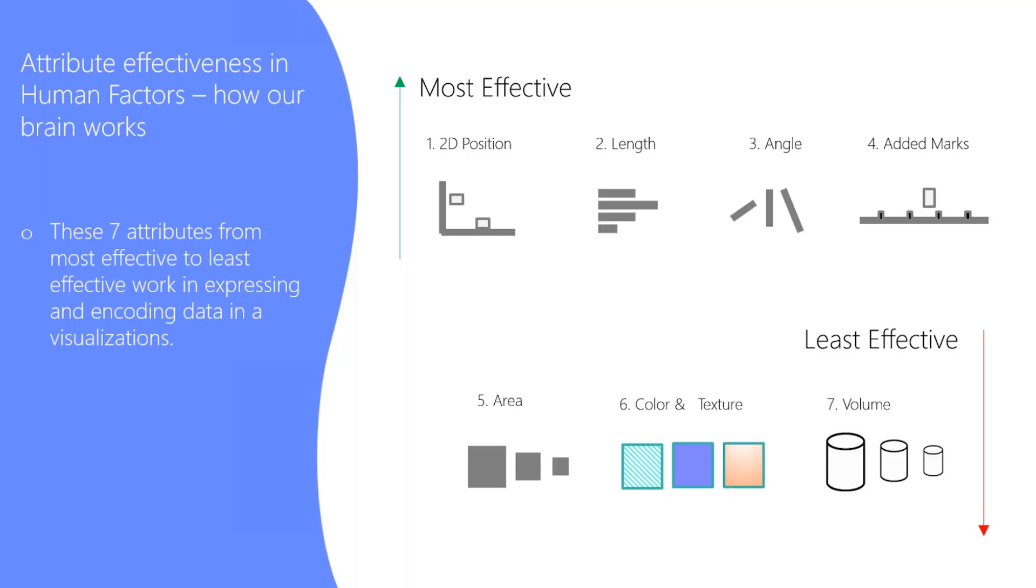And then there's least effective ways of trying to convey or help people understand information. Area, color, texture, and volume will not help you tell your story. They could confuse people or they could leave people with a different result than what you were trying to get them to. So when you think about color and texture, we'll look at some best practices around that and I'll show you a tool you can use. That's one of the biggest violators.